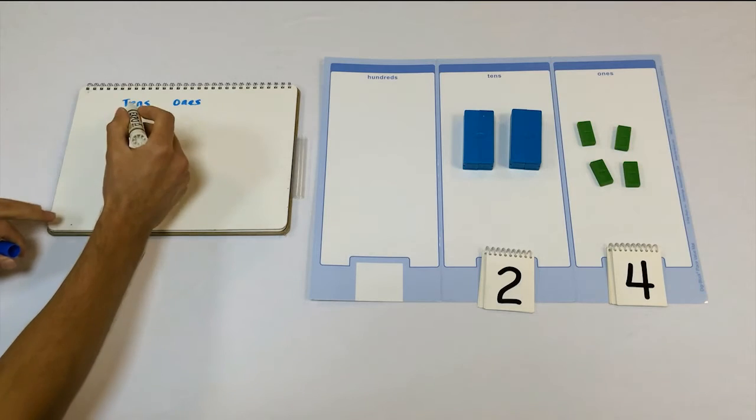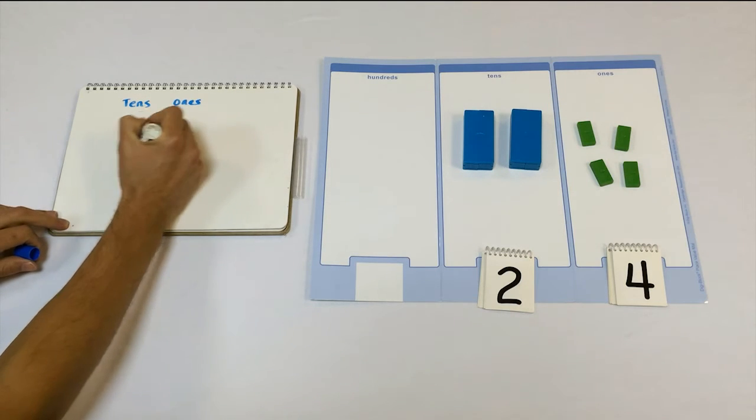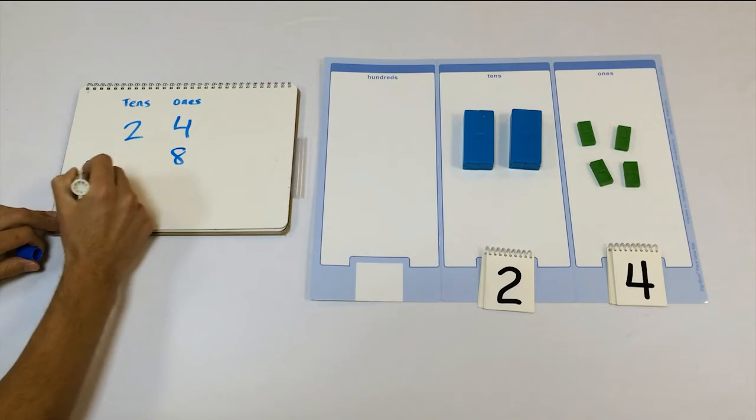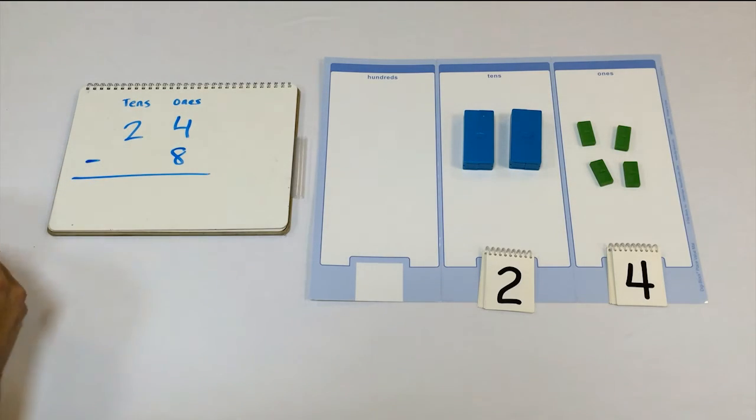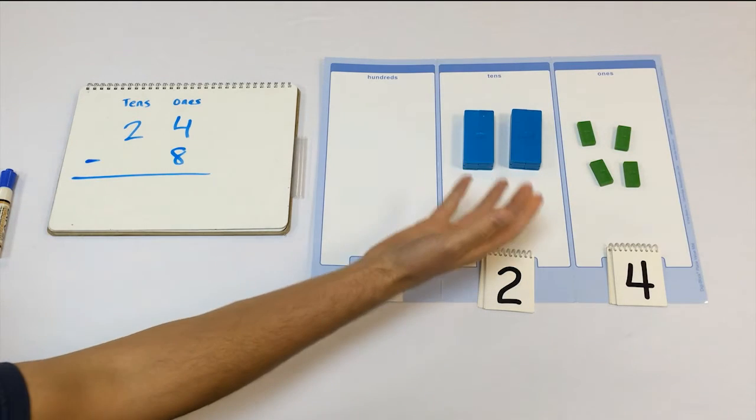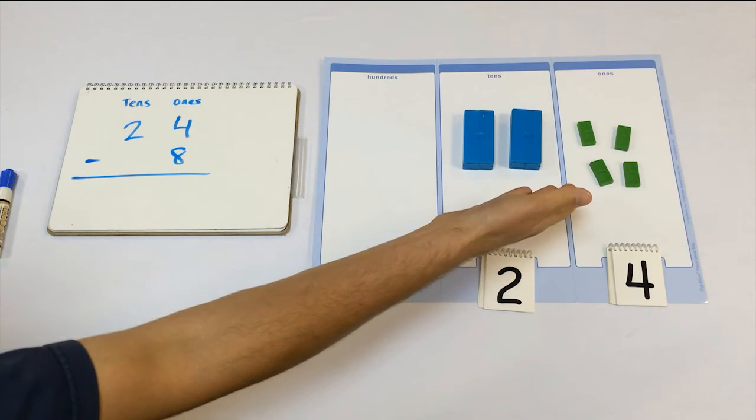So, here's the algorithm you're familiar with. 24 minus 8. Now, in blocks, it's pretty obvious. You don't have 8 ones. You're being asked to take away 8, but you only have 4.